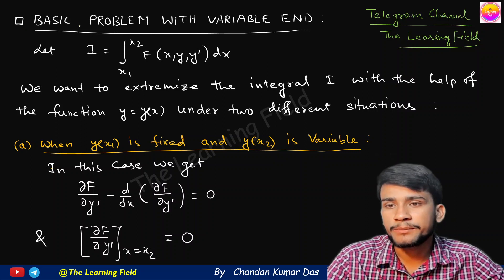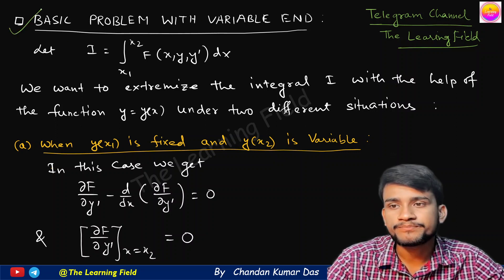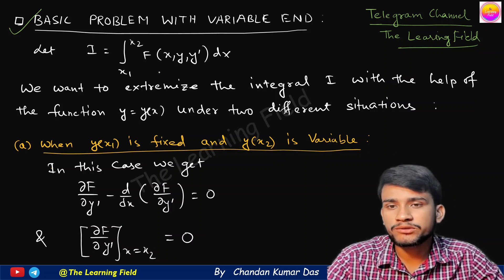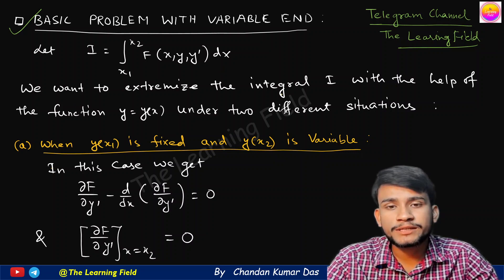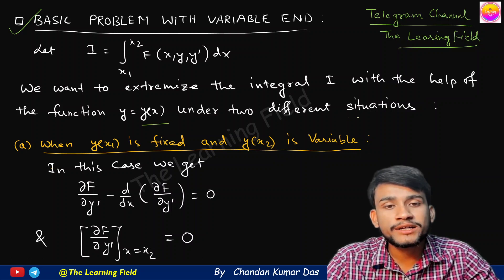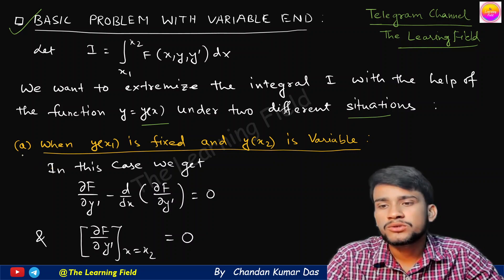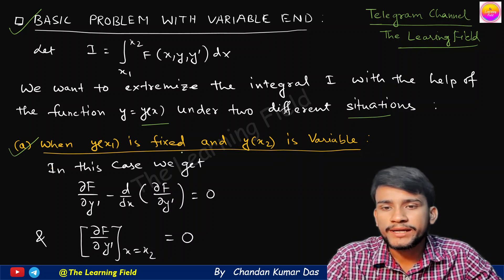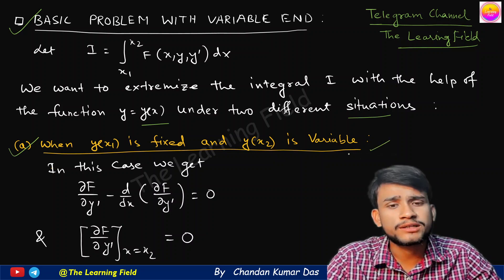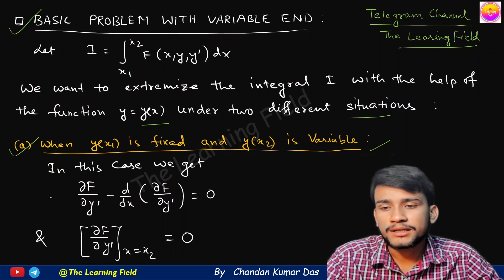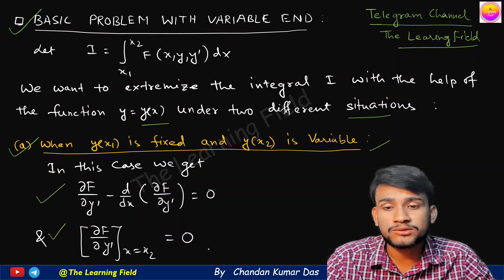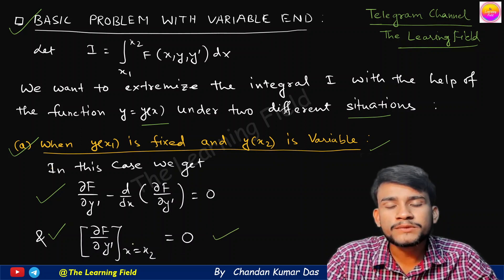Let's start. The basic problem with variable ends: let I equal to the integral from x1 to x2 of f(x, y, y') dx. We want to extremize the integral I using the function y = y(x) under two different situations. The natural boundary condition is an extended form of the moving boundary value problem. Case one is when y(x1) is fixed and y(x2) is variable — that is, free or arbitrary. In this case we get the Euler-Lagrange equation and also the condition that ∂f/∂y' at x = x2 equals zero.